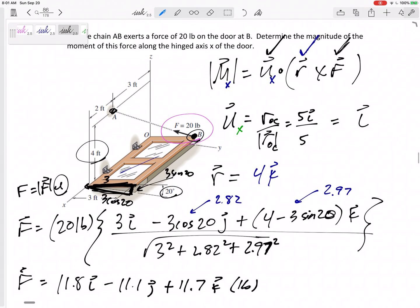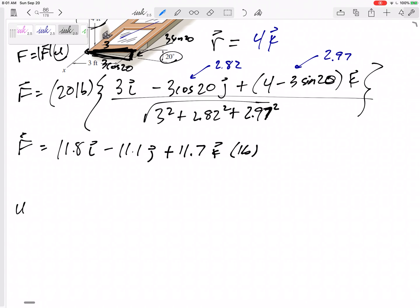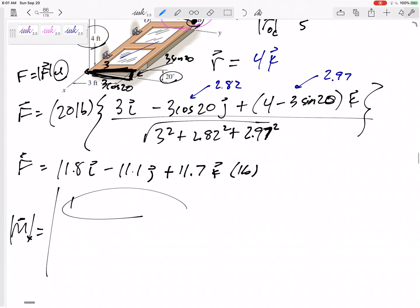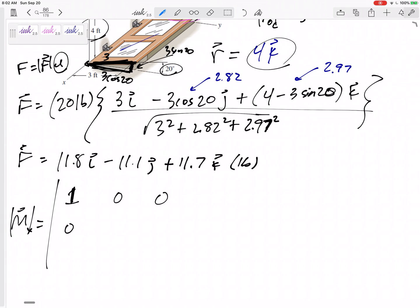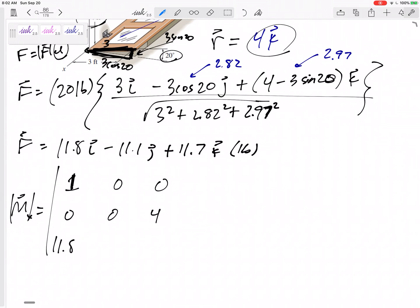All right, so now I've got all three of those. I can do my cross product. So my u would be—no, no, no, no, sorry—my magnitude of the moment about the x-axis would be my u, r, F, right? U, r, F. So this would be my u is i, which is one, zero, zero. My r is four in the k, zero, zero, four. And then my force: eleven point eight, negative eleven point one, eleven point seven. And do this, so this would be one times that minus four, negative eleven point one.